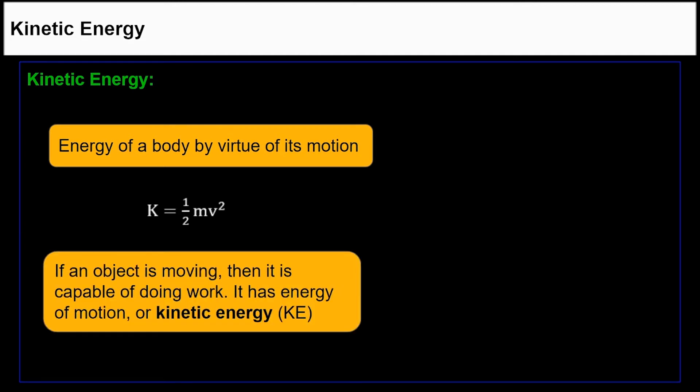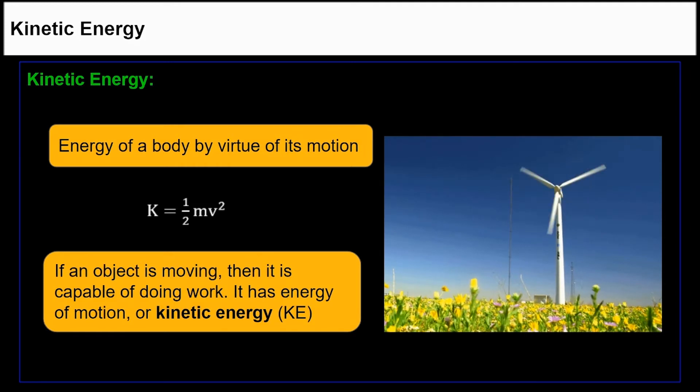If an object is moving, then it is capable of doing work because it has energy of motion, or kinetic energy. A wind turbine converts its kinetic energy into electrical energy.